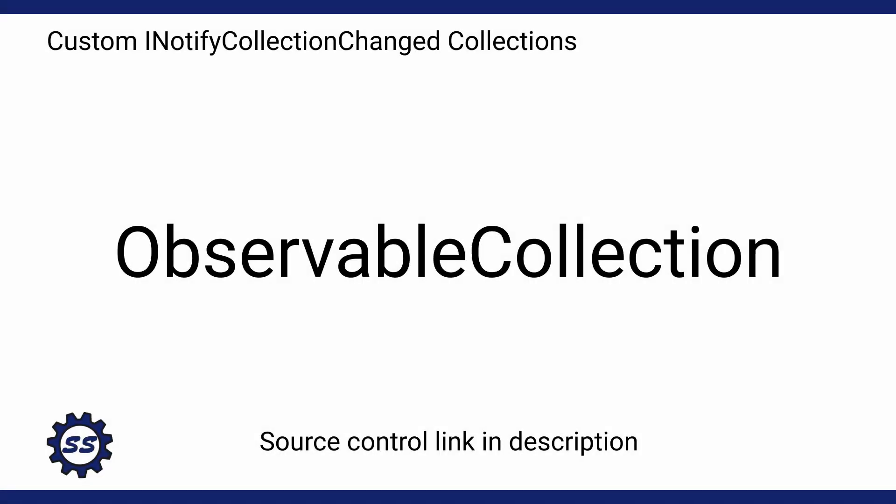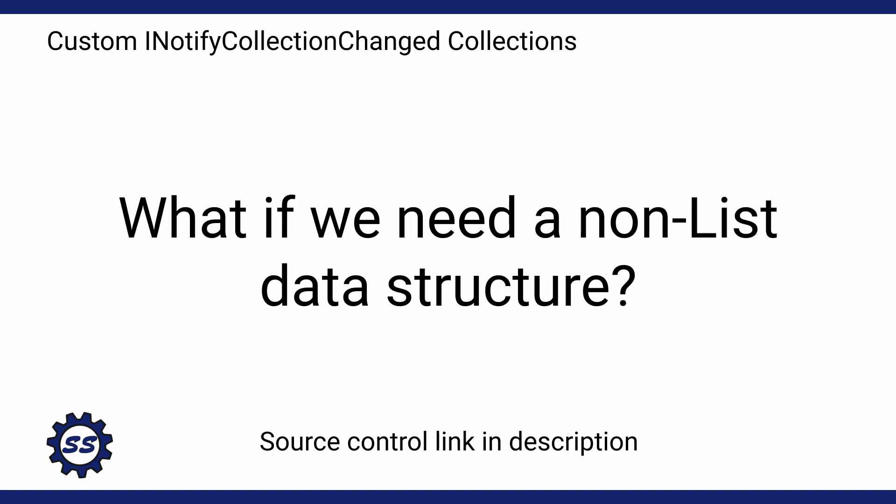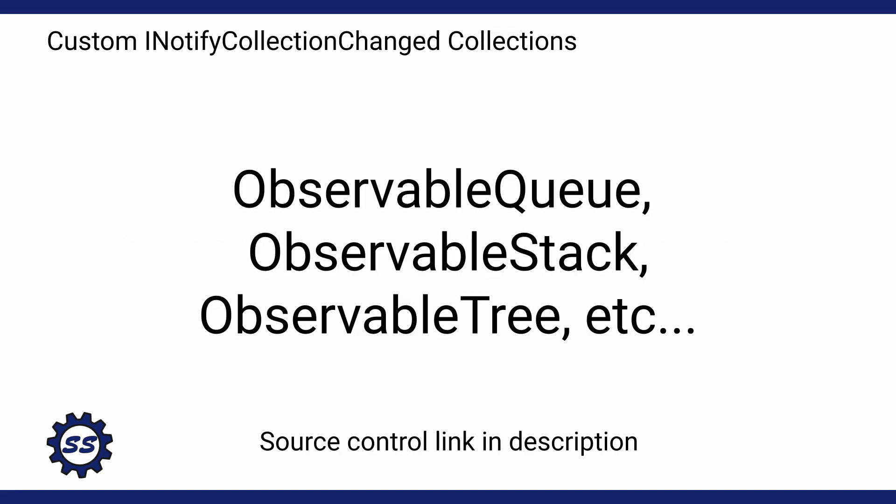Today I want to show off how to create a custom observable collection. Observable collections in WPF offer us a list-like API where we can add, remove, or insert items. But what if that API doesn't really fit our application? What if a queue or a stack would be better? Then we would want something like an observable queue or an observable stack, and that is exactly what we're going to make in this demo.